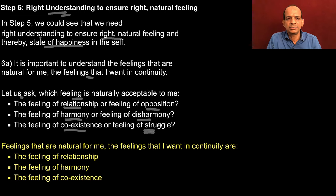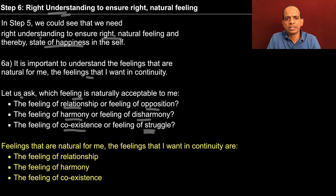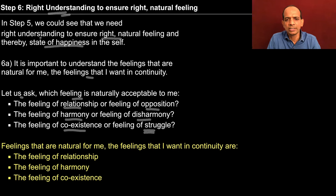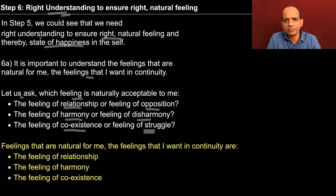As we could see in step four, it is me who decides the feeling. In step five, we try to make out what is the basis of this decision making. And then we are trying to make out that if I am going to decide my basis for decision making of the feeling, then which feelings are naturally acceptable to me? And I have various choices. So let me ask myself, what is naturally acceptable to me? And this is something to be done by each one of us.